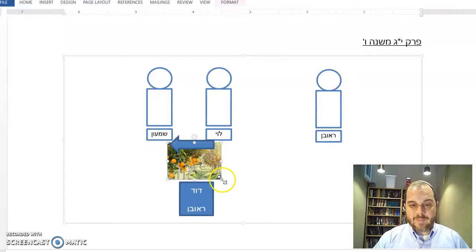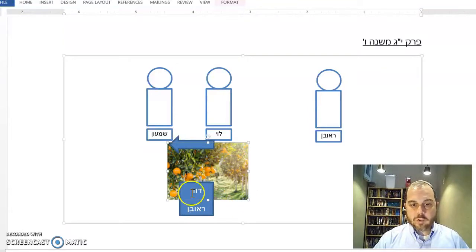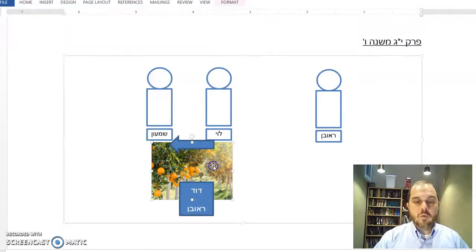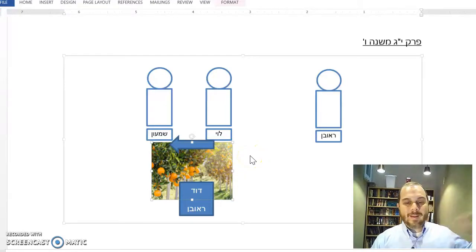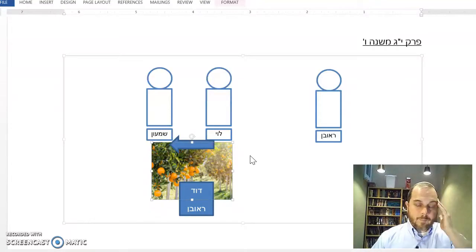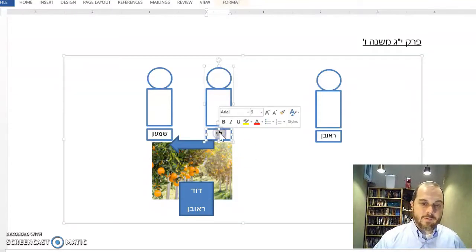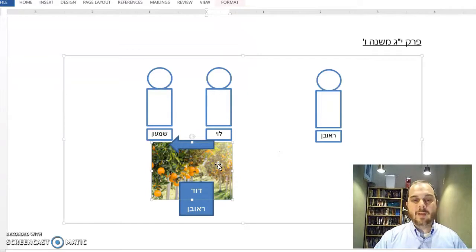But what if we're talking about a field? We've got this orange orchard here. The field is muchzak - there's a recognized ownership. You don't have to stand on your land all the time. Everybody knows it's Levi's field, and nobody knows that it's not Levi's field.